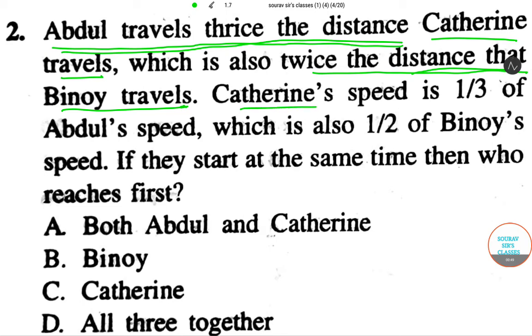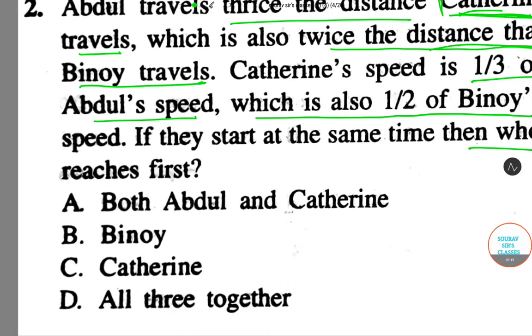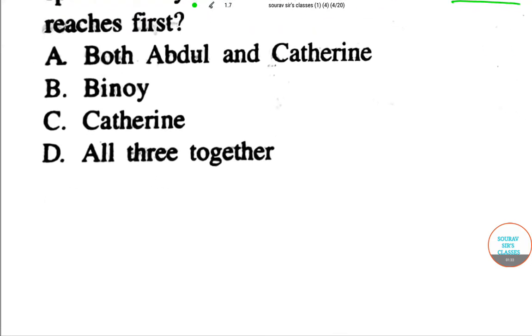Catherine's speed is one-third of Abdul's speed, which is also half of Binoy's speed. If they start at the same time, then who reaches first?